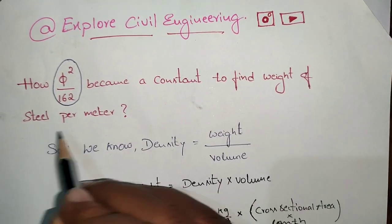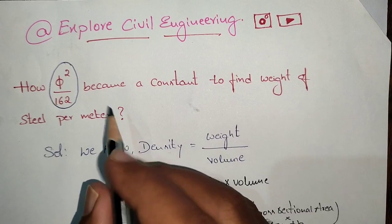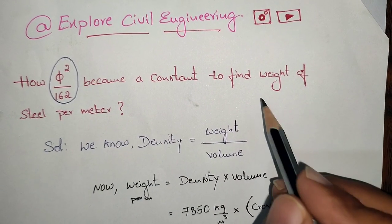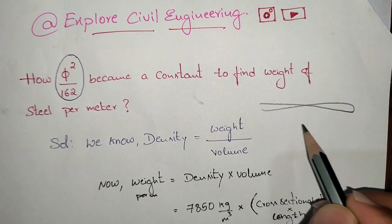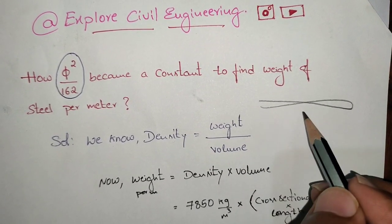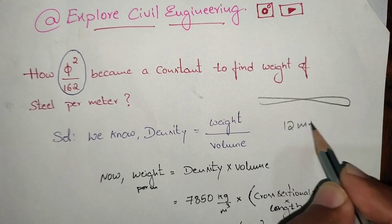Before getting into it, let's know about the length of steel bar available in market. Actually the whole rod was bent and the whole length is 12 meter plus or minus 5mm, approximately 40 feet.